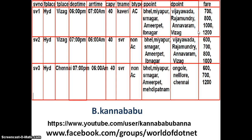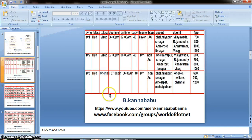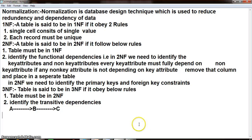The fare is purely depending on the destination point. Initially I gathered the data depending on the requirement and kept it in the form of a table, which is a collection of rows and columns. The intersection of a row and column is called a cell. Whenever we develop any project, first of all we have to prepare the database. At the time of designing the database, we need to concentrate on normalization. Normalization is the database design technique which is used to reduce redundancy and dependency of data.